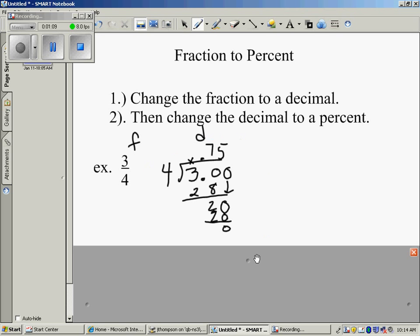From here, I'm going to turn my decimal of 75 hundredths into a percent. Remember, to turn a decimal into a percent, I'm going to move that decimal point two places to the right and add a percent sign. So 75 hundredths becomes 75 percent. That's your first example.